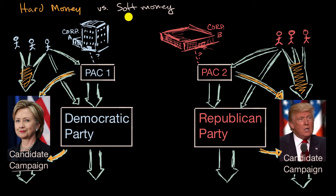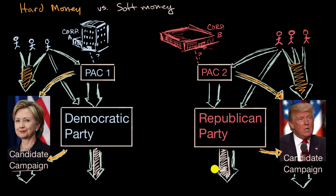A simple definition of soft money is that it doesn't have the regulations that hard money does. An example would be money that the Democratic or Republican Party spends during the election on what's sometimes known as party-building activities — to get more people to join their party or to advertise about certain issues. As long as it's done not in coordination with the candidates' campaigns, there is no limit. So some of the money from an individual or a PAC to a party can also be considered soft money, if it's kept separate from coordinating with a candidate's actual campaign and used for party-building activities.